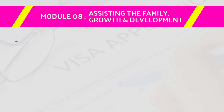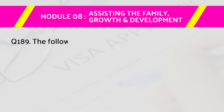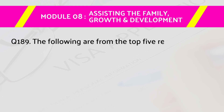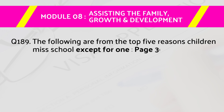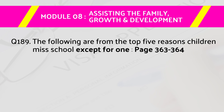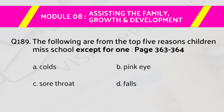Question number 189: The following are from the top five reasons children miss school except for one — page numbers 363 to 364. Answers are: A) colds, B) pink eye, C) sore throat, D) falls.